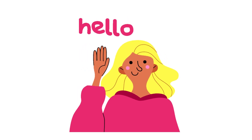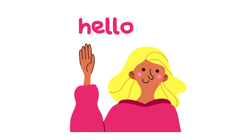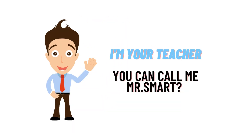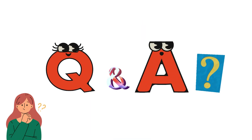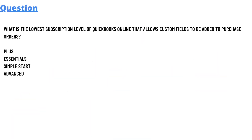Hello everyone, my name is Mr. Smart and I'm your teacher. I'll be teaching a different question and answer in this question and answer series. Our today's question which we'll be discussing is: which is the lowest subscription level of QuickBooks Online that allows custom fields to be added to purchase orders?